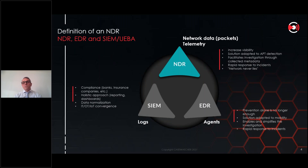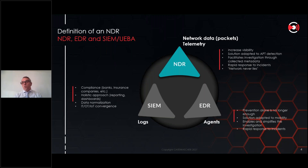Gartner is also famous for what they call the visibility triad: a combination of NDR, EDR (endpoint detection and response), and SIEM. The main difference between these tools is the way you collect data. Endpoint is mainly based on an agent installed on every asset to collect telemetry. For network, it's based on packets collected from the network via a traffic copy. And SIEM is mainly based on logs sent to a central place for storage, compliance, and correlation.